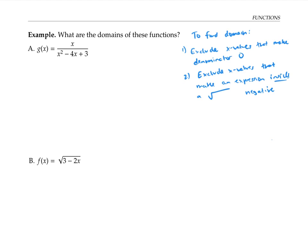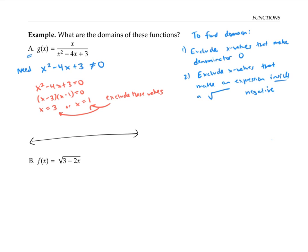Let's apply these principles to examples. For the function in part a, there's no square root, but there is a denominator, so we need to exclude x values that make the denominator zero — that is, where x squared minus four x plus three equals zero. Factoring gives x equals three or x equals one, so we exclude those values. All other x values are fine. In interval notation, the domain is (−∞, 1) ∪ (1, 3) ∪ (3, ∞).